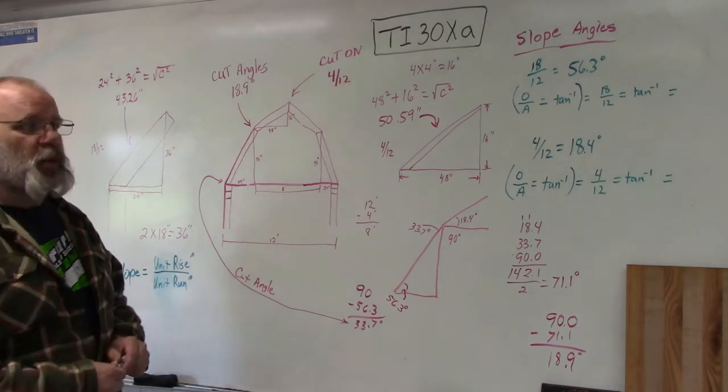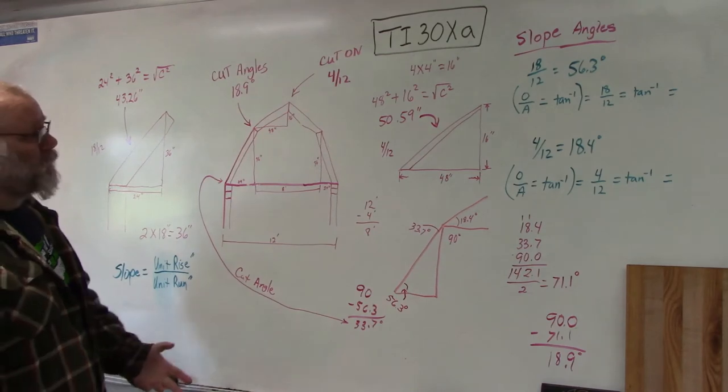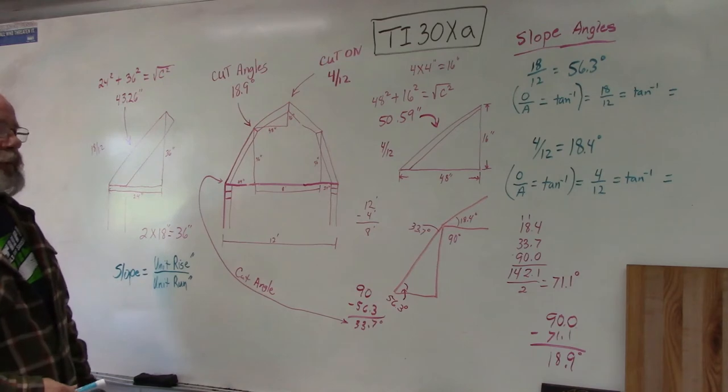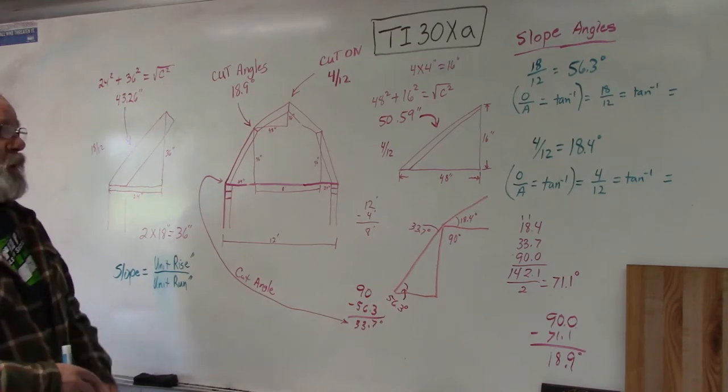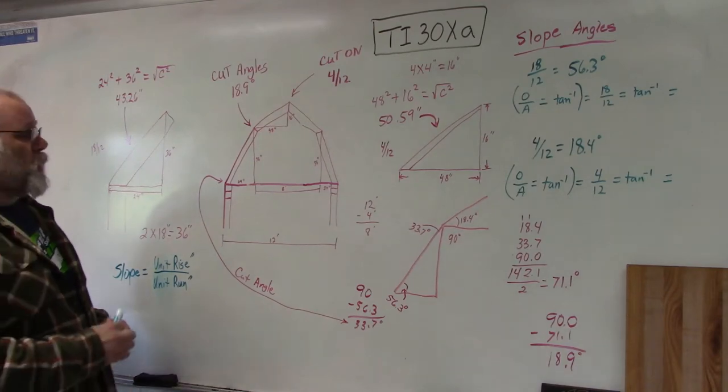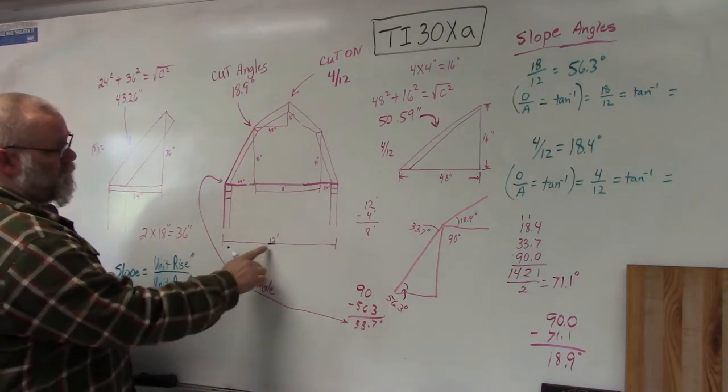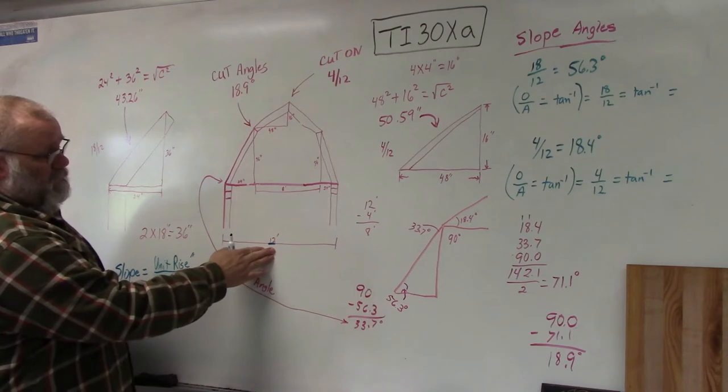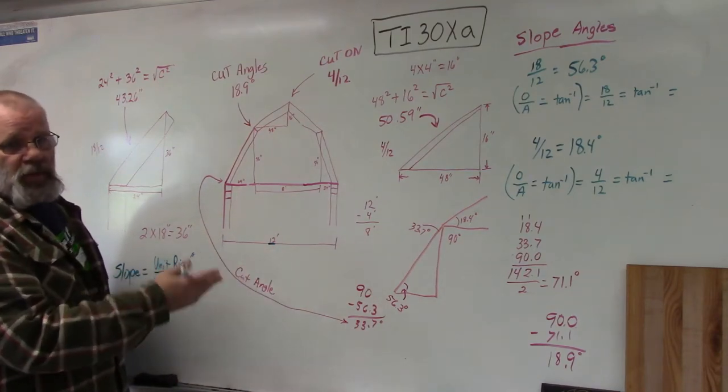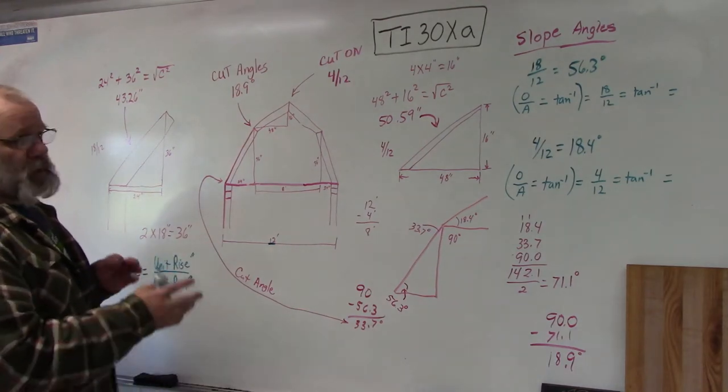In this video I'm going to show you how to figure rafters for a gambrel roof, or what most people call a barn roof. It's pretty simple - if you follow a few basic rules you can figure them out easily. The main thing is your barn or structure should be an even foot, so like my example here is 12 feet. You might want to keep it at 8, 10, 12, 14, or 16 feet and your numbers will work a lot better.